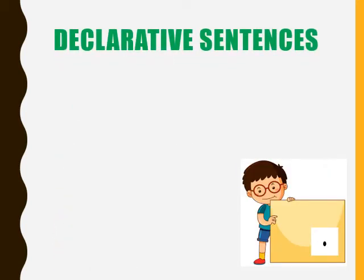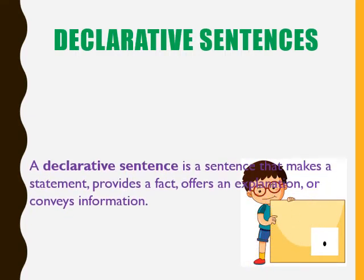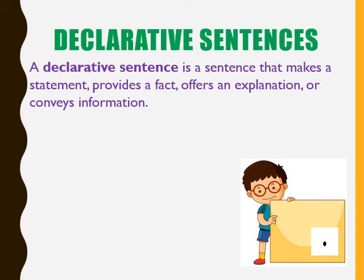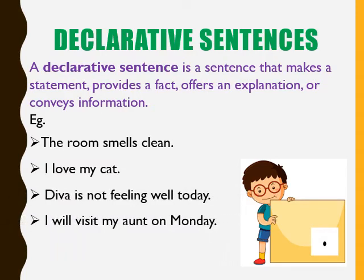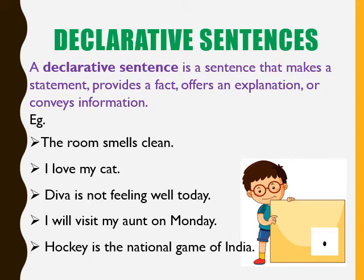Declarative sentences: A declarative sentence is a sentence that makes a statement, provides a fact, offers an explanation, or conveys information. For example: The room smells clean. I love my cat. Diva is not feeling well today. I will visit my aunt on Monday. Hockey is the national game of India. Declarative sentences always end with a full stop.